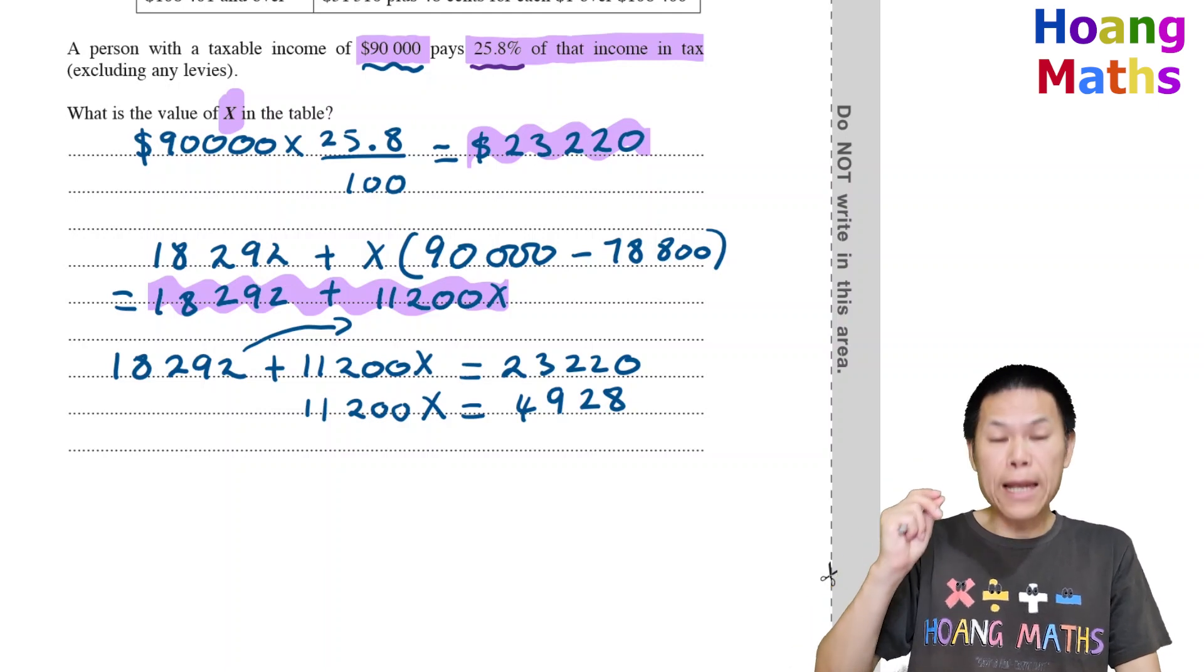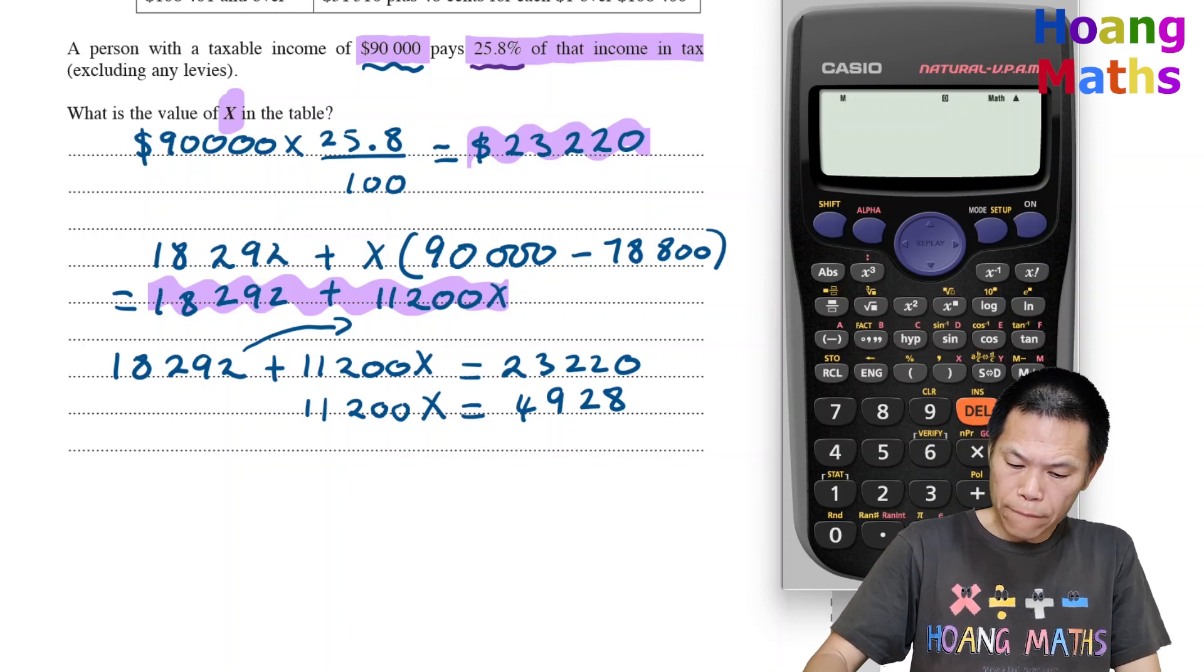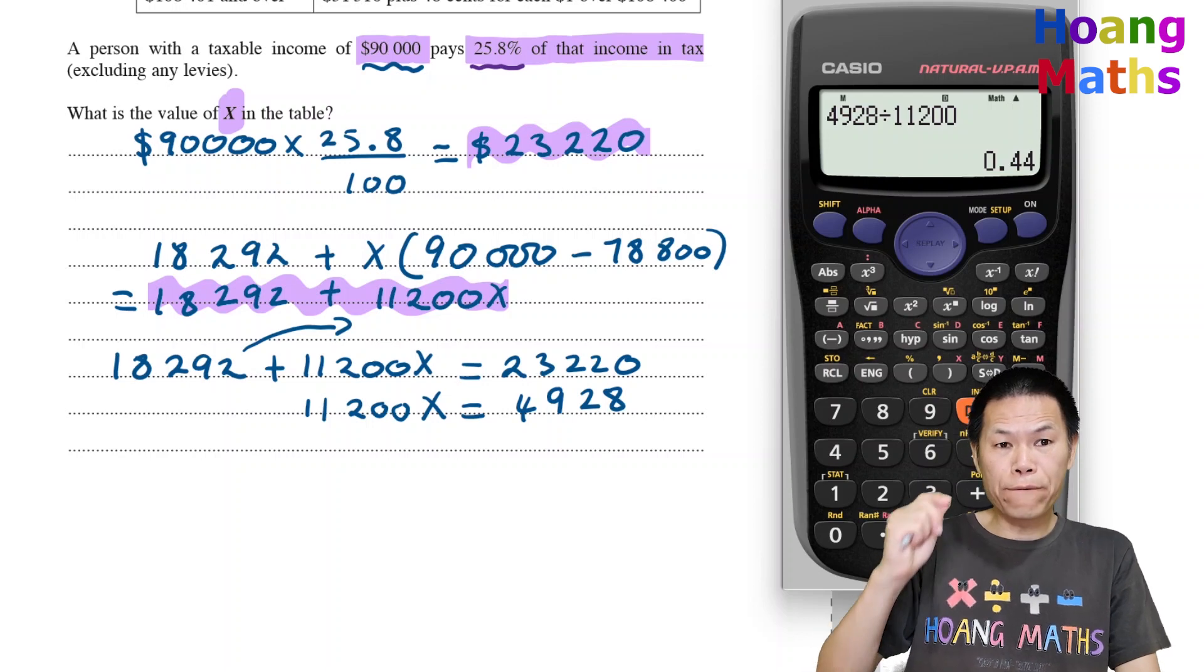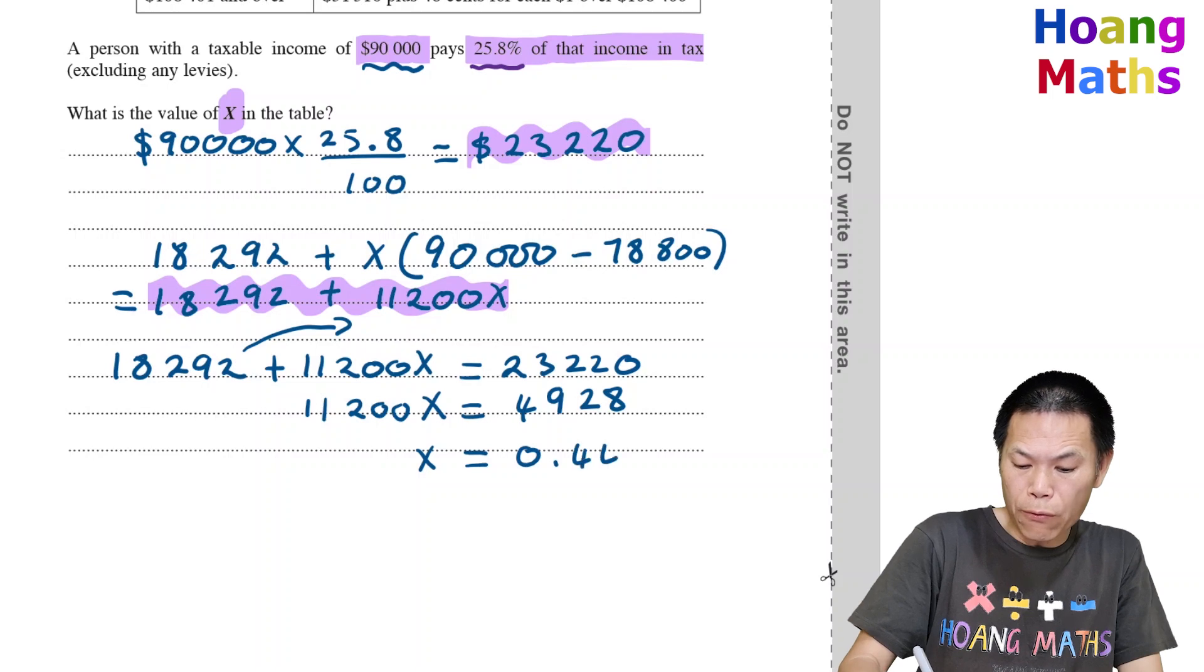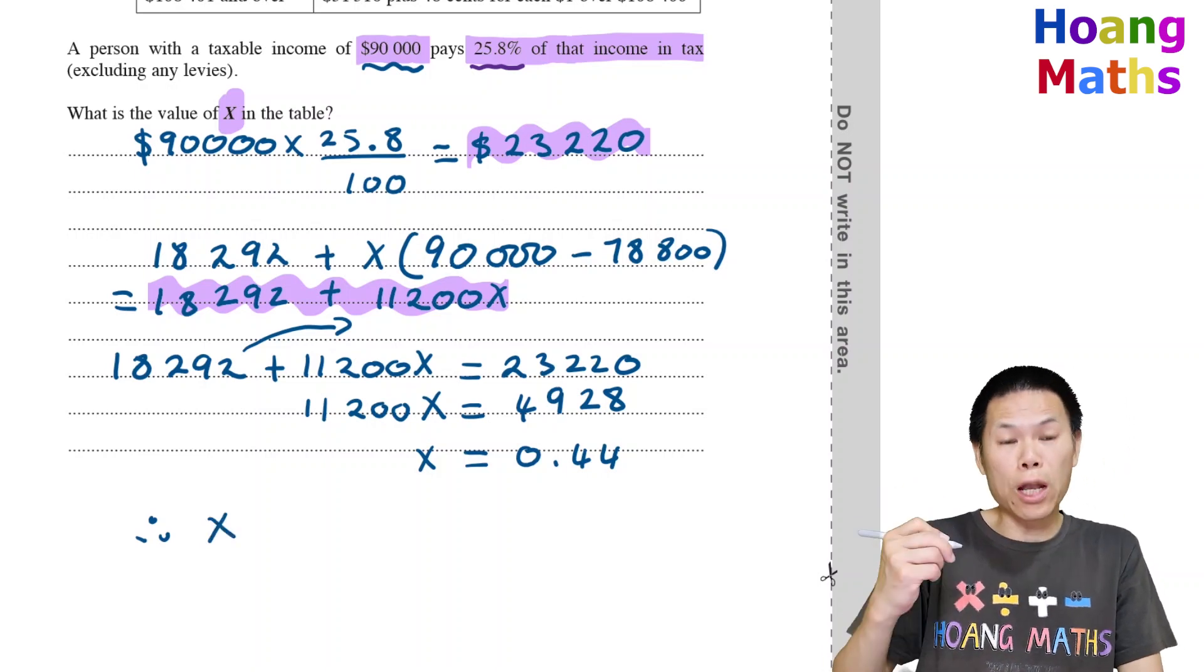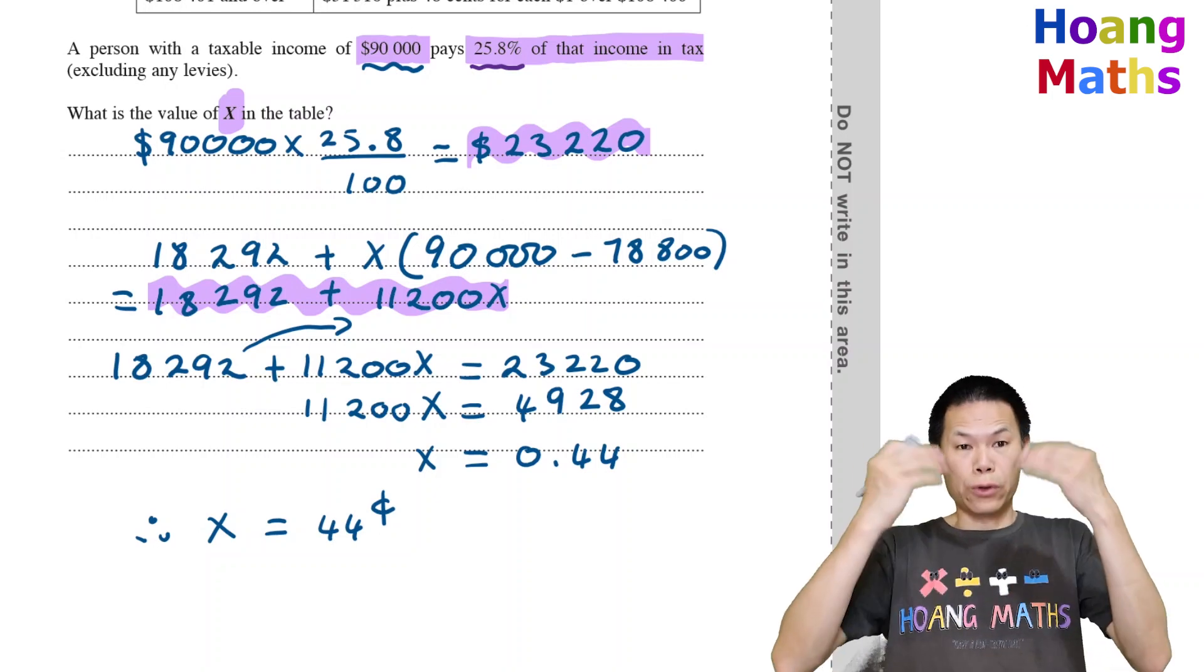I divide both sides by $11,200. So $4,928 divided by $11,200 equals 0.44. Therefore X is 0.44 because this is per dollar. So X equals 0.44.